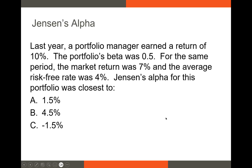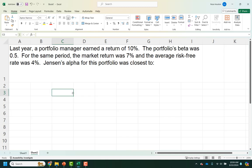So let's work on another CFA question. Last year, a portfolio manager earned a return of 10%. The portfolio beta was 0.5. For the same period, the market return was 7%. The average risk rate was 4%. Jensen's alpha for this portfolio was closest to what? Now, I haven't actually introduced Jensen's alpha. When we talk about alpha, that can be an alpha on a stock or portfolio. Generally, when we talk about portfolio alphas, we use the term Jensen's alpha. So if you ever hear the term Jensen's alpha, just recognize that that is the alpha on a portfolio, like a mutual fund or something. So let's pull this data into Excel and calculate this.